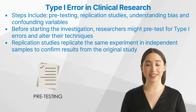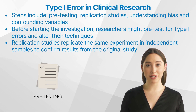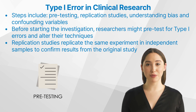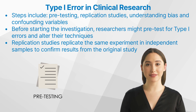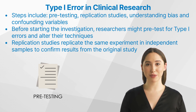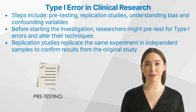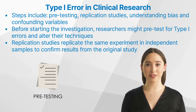These steps include pre-testing, replication studies, and understanding bias and confounding variables. Pre-testing is an important step researchers can take to reduce the risk of making a type 1 error. It involves conducting a pilot study before beginning the larger study in order to identify any potential issues with the design or implementation. By pre-testing, researchers can identify problems that may lead to a type 1 error and adjust their methods accordingly.